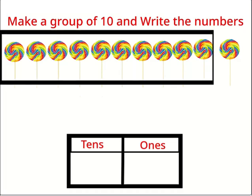We have 11 candies. Now let's make a group of 10 candies. Okay kids, now we write the number 11 as 1 tens and 1 ones.